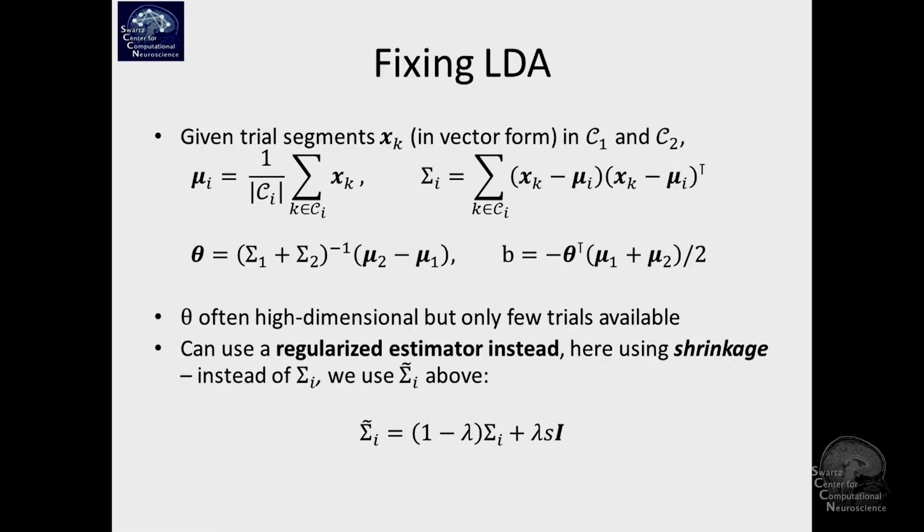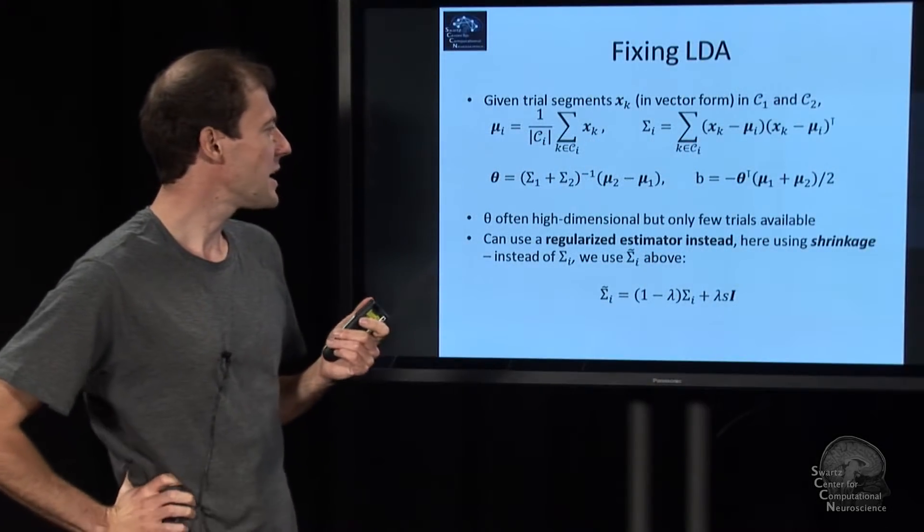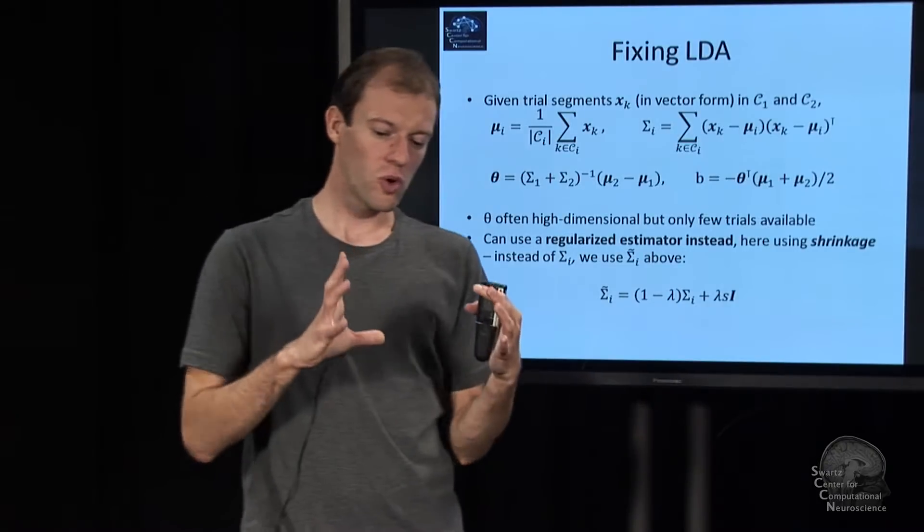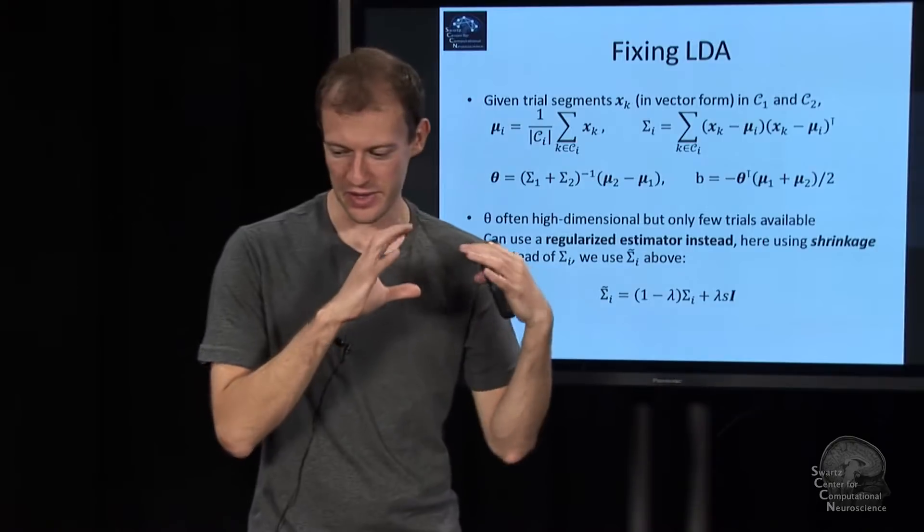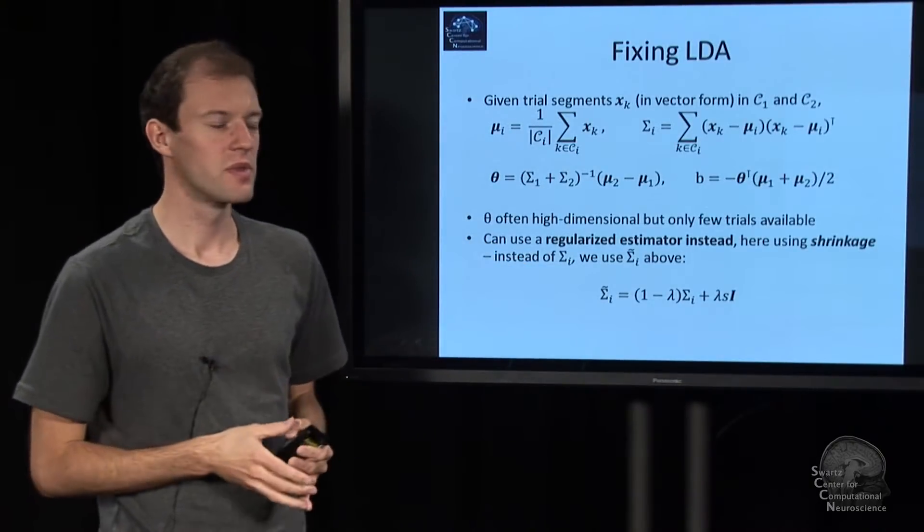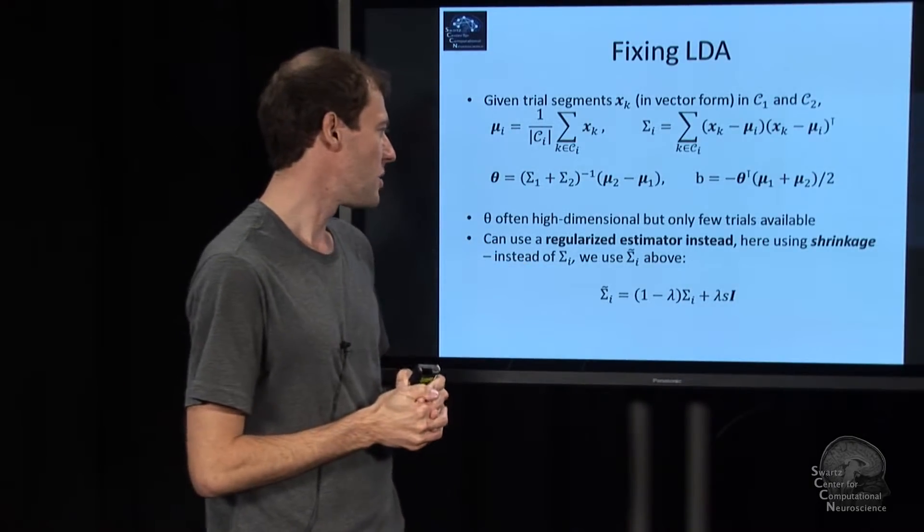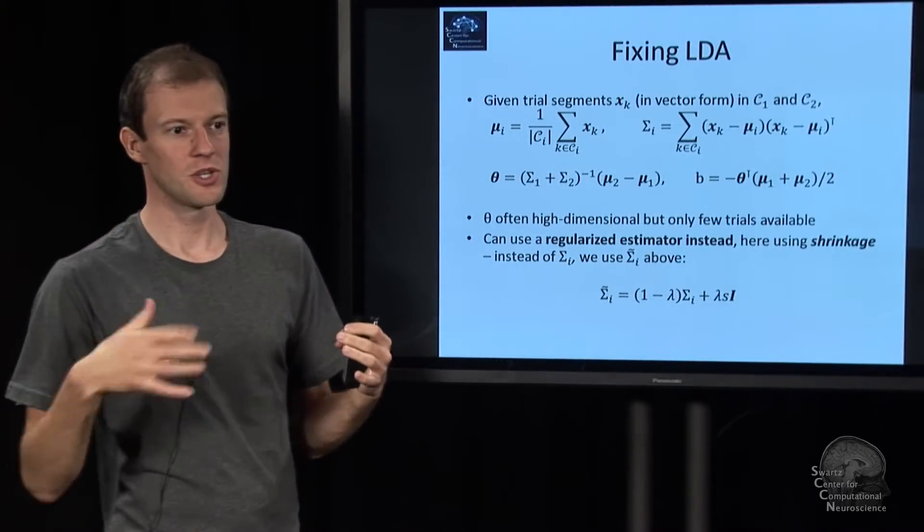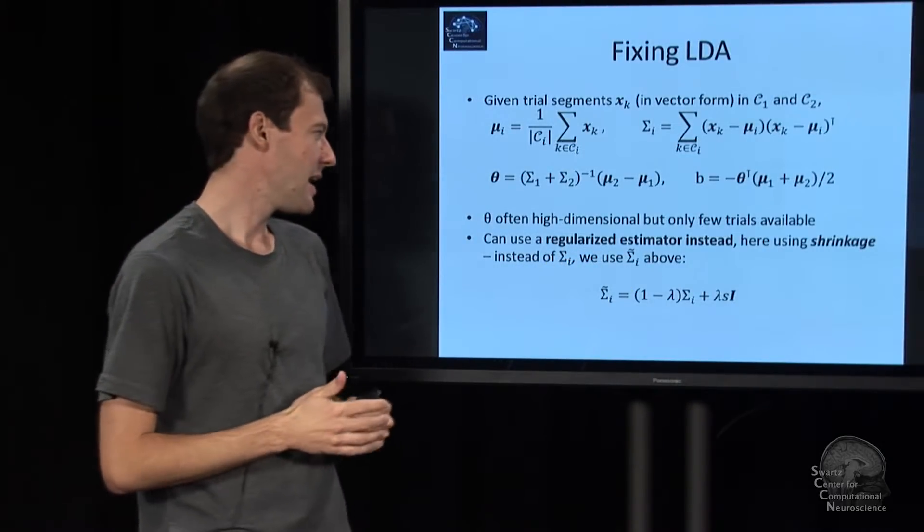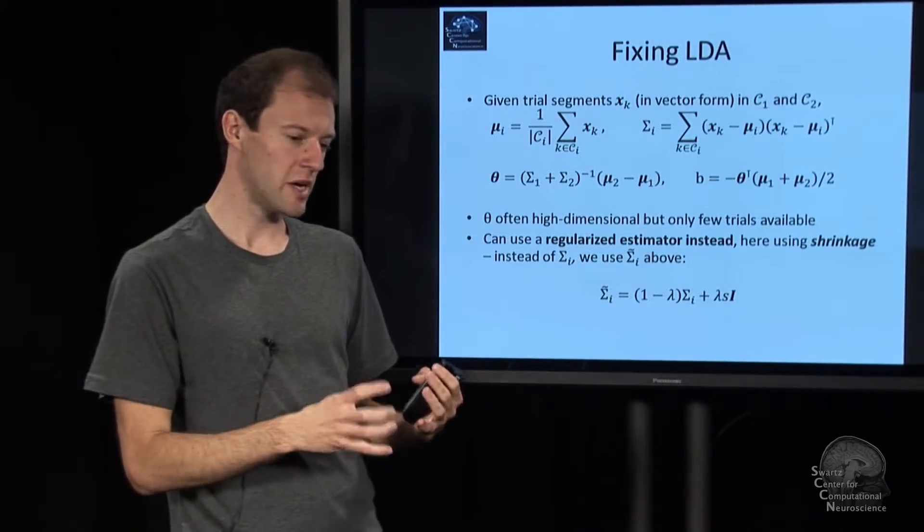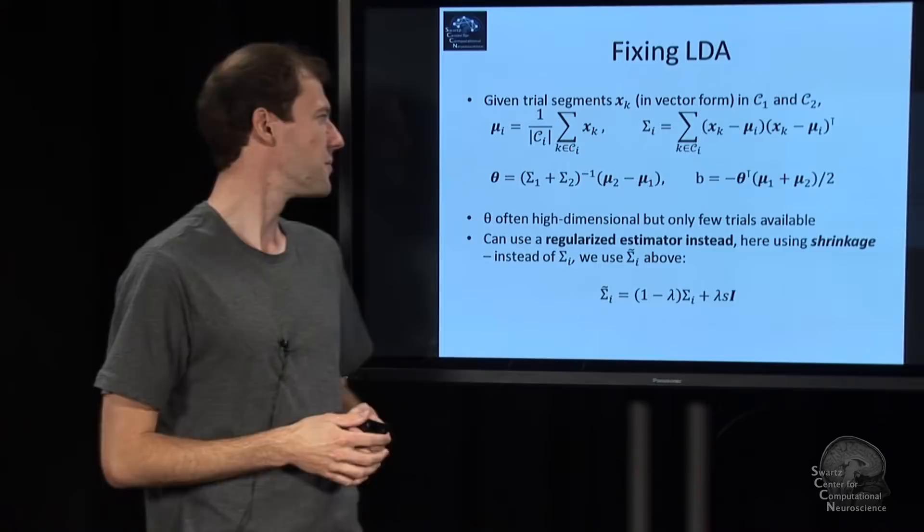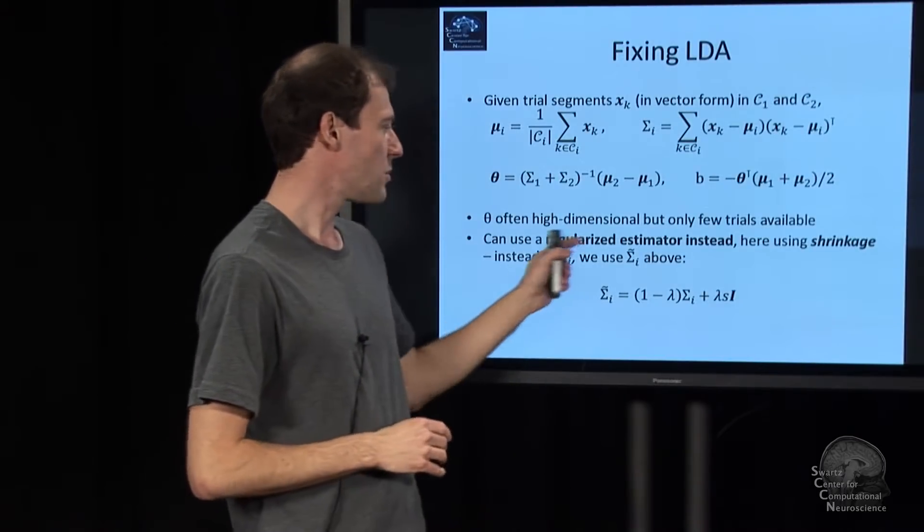This technique is called shrinkage. It's a way to control the effective number of degrees of freedom in the parameters that the classifier learns. It's a way to penalize overly complex and rich models and encourage simpler models. Models that are just simple enough that you manage to capture what you need to capture. That's an example of regularization.